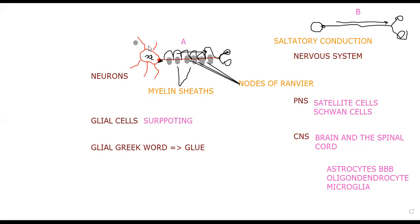Don't forget microglia are the macrophages of the brain. Astrocytes are part of the blood-brain barrier and provide nutrients to brain cells. Neurons need proteins and nutrients — in the CNS these come from astrocytes; in the PNS they come from satellite cells.